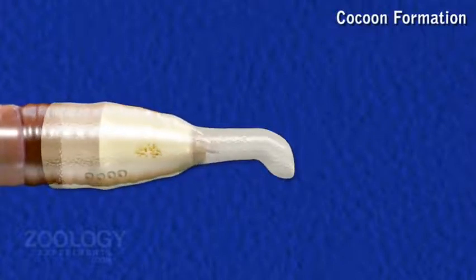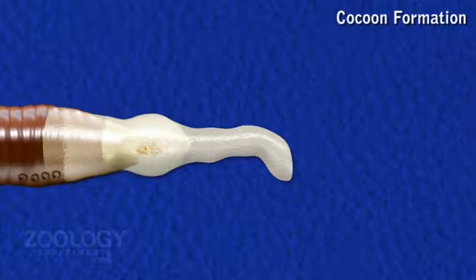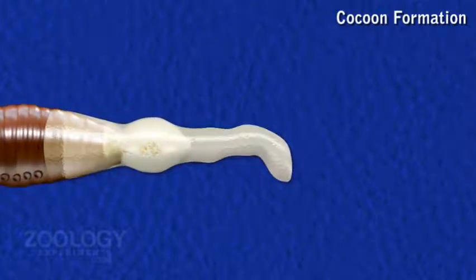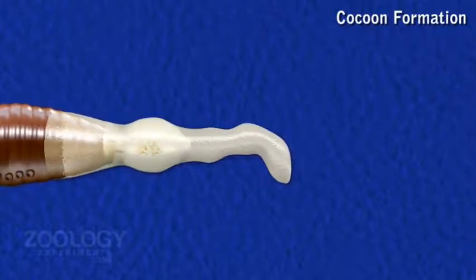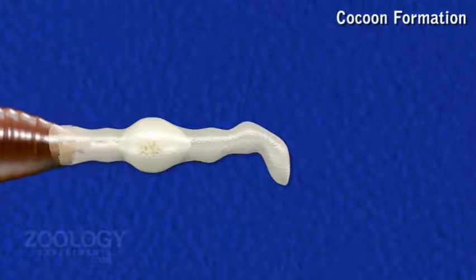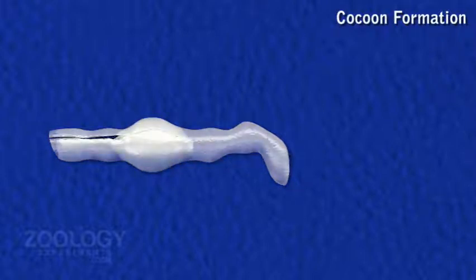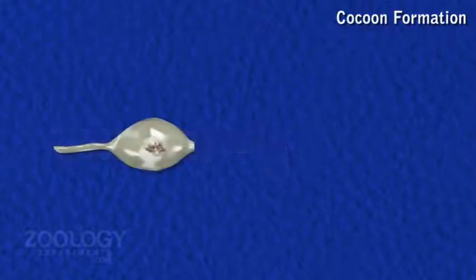An albuminous fluid is also deposited inside the cocoon by the glands of the interior segments of the body. Finally, when the cocoon is thrown off the head, its elastic ends seal up and a yellowish rounded cocoon is formed.